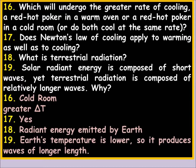Solar radiant energy is composed of short waves, yet terrestrial radiation is composed of relatively longer waves. Earth's temperature is lower, so it produces waves of longer wavelength. The sun gives off visible light — shorter waves. The Earth gives off infrared heat — longer waves. Just look at the electromagnetic radiation spectrum: infrared is long waves, visible is shorter. It's a relatively easy question.